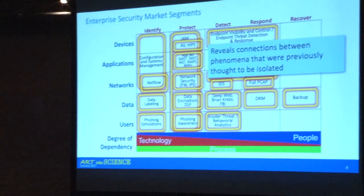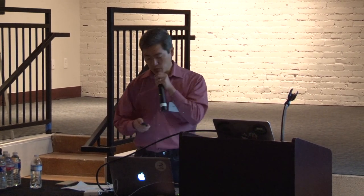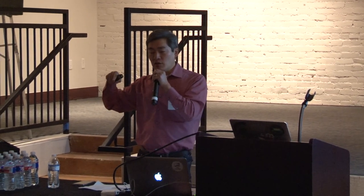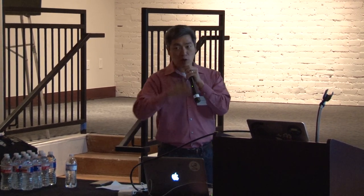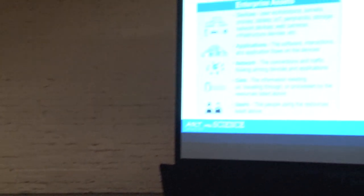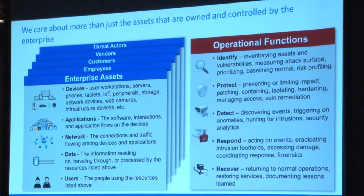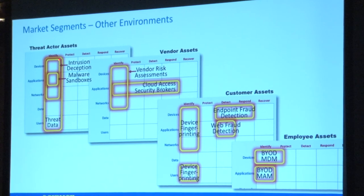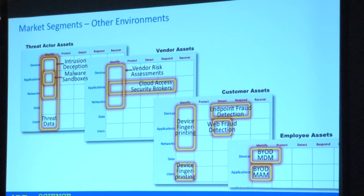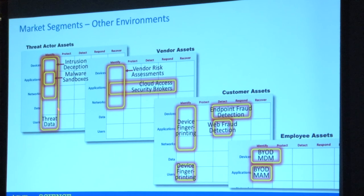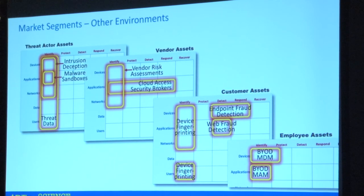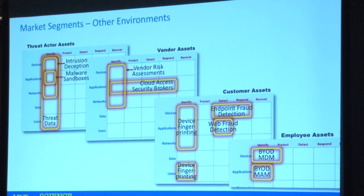When I looked at the model and said I can't fit something fairly obvious like threat intelligence, I realized why. The matrix as we have it now is showing what we care about, but it's stuff that we own. We also care about assets owned by employees, customers, and vendors. We even care about assets owned by threat actors. When I look at assets owned by threat actors, that's when I get threat intelligence — or what I prefer to call threat data. A threat actor application is better known as malware.